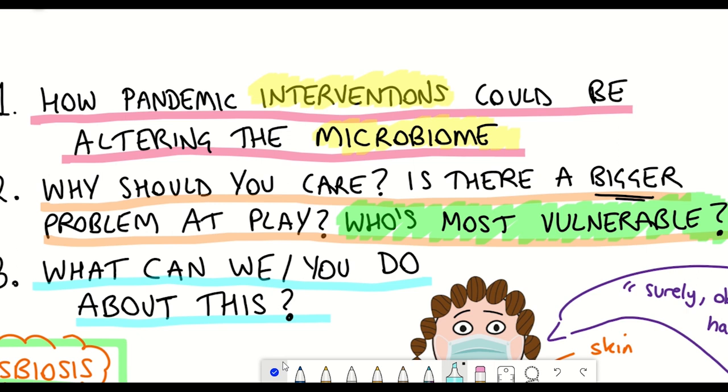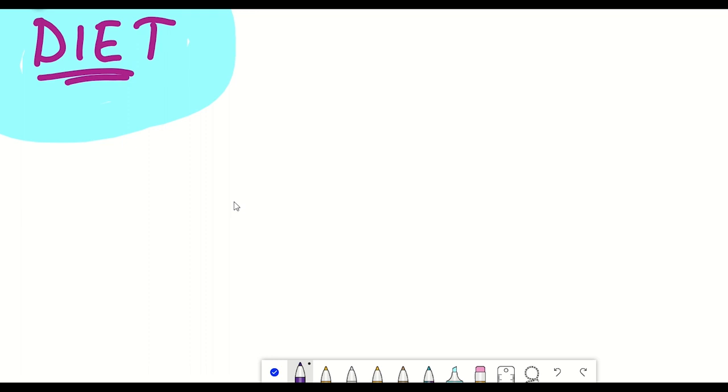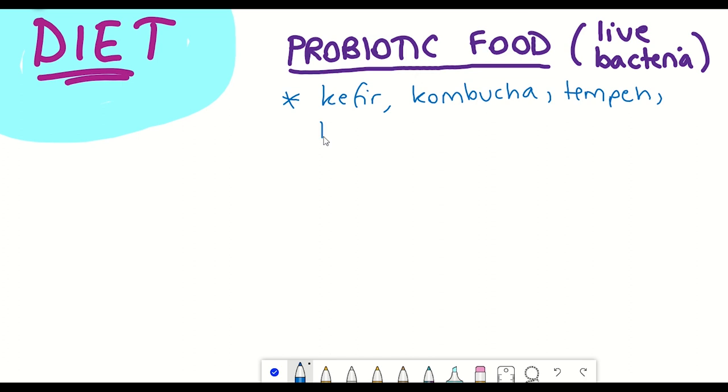But there are things that we can do about this. Firstly, diet heavily influences the microbiome and that's something that can be easily changed. For example, increasing the consumption of probiotic foods, foods that contain living strains of bacteria. This includes fermented food products such as kefir, kombucha, miso, kimchi and even sourdough bread, which I do believe became a bit of a popular craze in the UK lockdown.